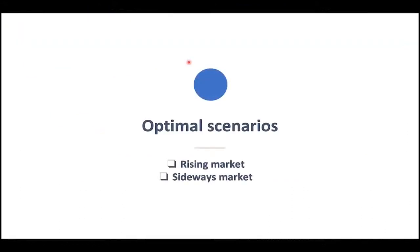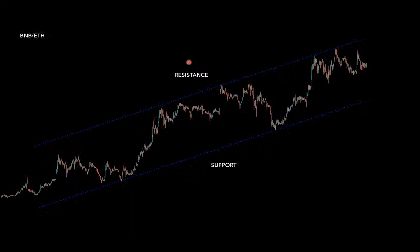The optimal scenarios to launch the bot are mainly the rising market — we make money when the market is rising — and also the sideways market, where automation significantly outperforms the ordinary HODL strategy. HODL means simply buying a cryptocurrency asset and holding it in your portfolio waiting for the price to appreciate. With automation, you can significantly outperform the HODL strategy, and I'll show you exactly how.